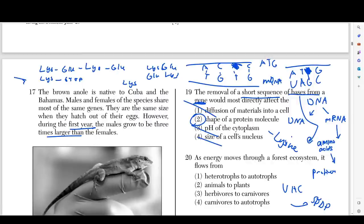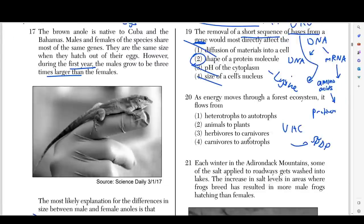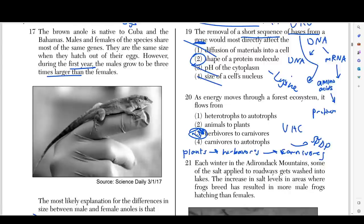Number twenty says as energy moves through a forest ecosystem, it flows from herbivores to carnivores. Think about a regular food web — it goes from plants eaten by herbivores, which are then eaten by carnivores. So energy really is flowing from plants to carnivores — and also from herbivores to carnivores. Carnivores to autotrophs would mean plants are eating carnivores — that doesn't happen. Herbivores eat autotrophs, not the other way around. Animals to plants means plants eat animals — that doesn't happen. Heterotrophs to autotrophs also means plants eat animals, which doesn't occur.